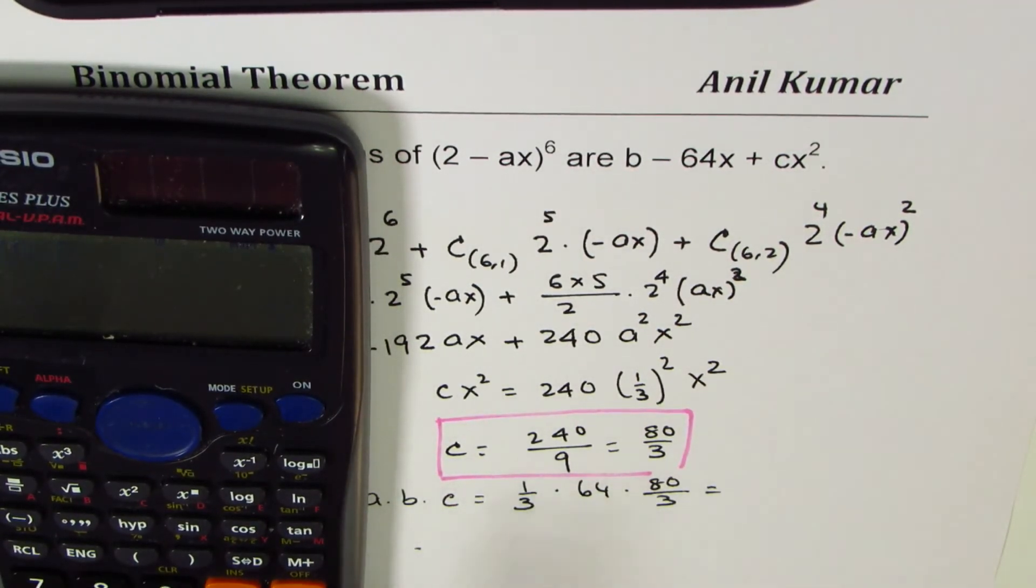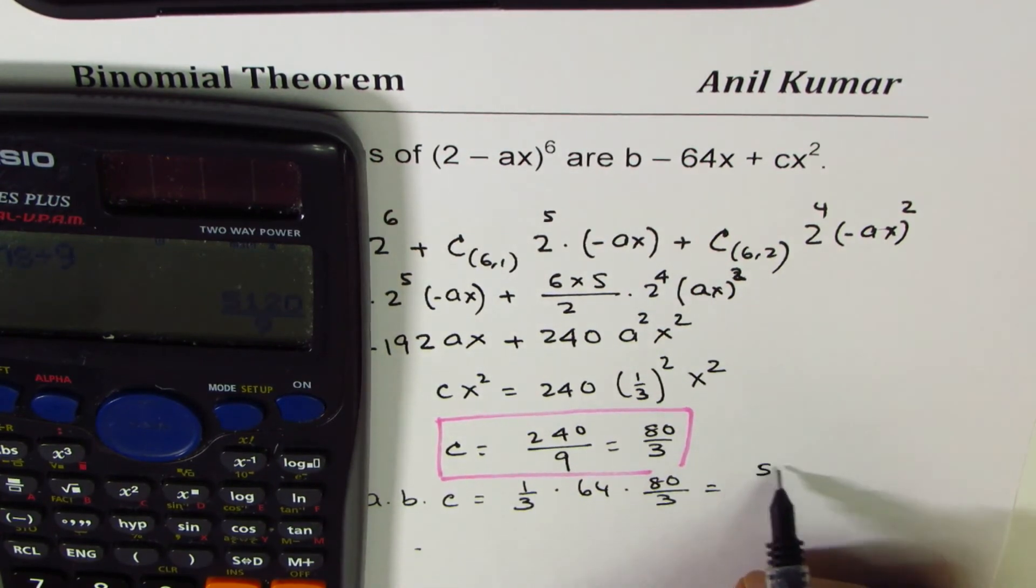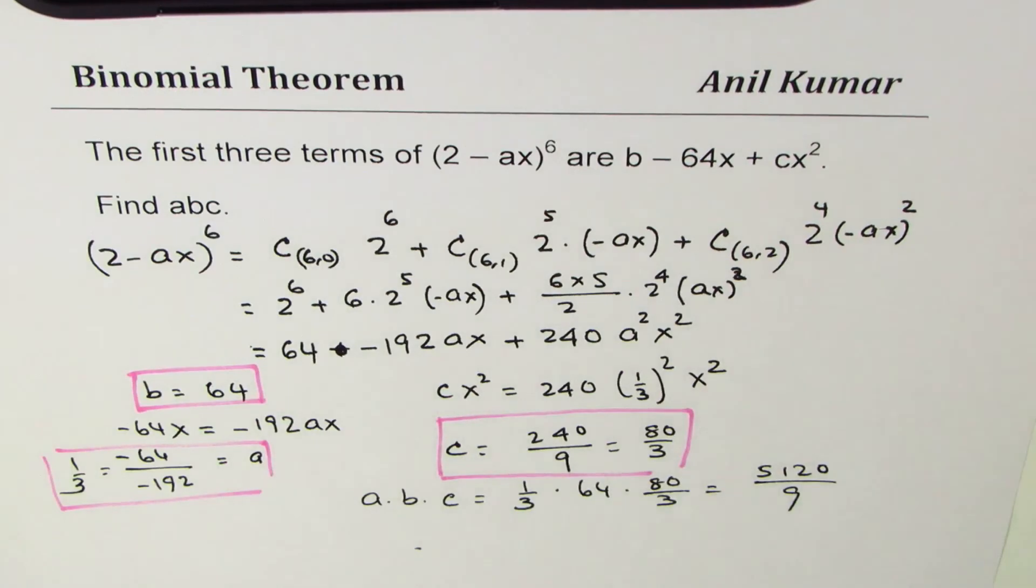So we can use the calculator again. 64 times 80, so we have 80 × 64 and divide this by 9. So we get 5120 ÷ 9 as the result. So product of abc is 5120/9.